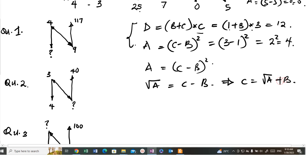And again, from this equation, B is equal to C minus square root of A.